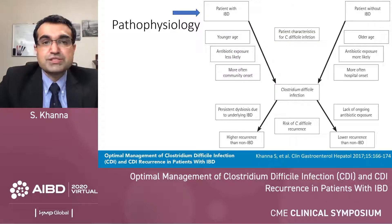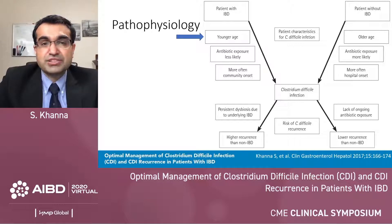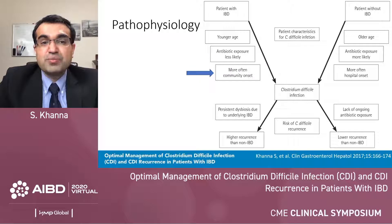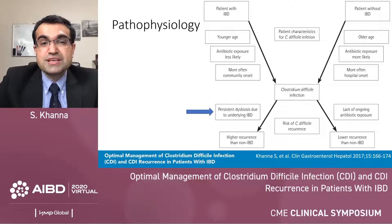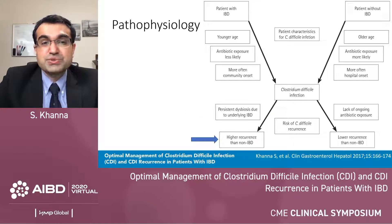Comparing patients with and without IBD who have C. diff infection: IBD patients tend to be younger, are less likely to have been exposed to antibiotics, and are more likely to have community-onset infection. The risk of recurrence is actually higher in patients who have IBD, because persistent dysbiosis due to underlying inflammatory bowel disease is a risk factor for C. diff infection. Patients without IBD have a lower recurrence rate when antibiotic exposure ends, whereas IBD patients show a higher recurrence rate.